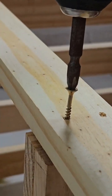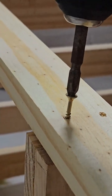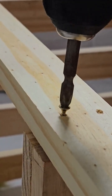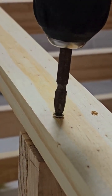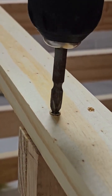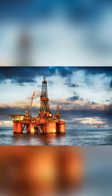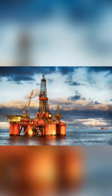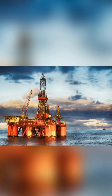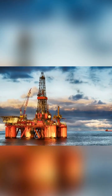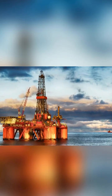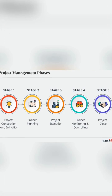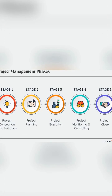The flushing system is responsible for removing the cuttings generated by the drill bit as it penetrates the rock. However, geoscientists need to understand that the choice of drilling method is not one-size-fits-all. It depends on the stage of a project and the type of data needed.